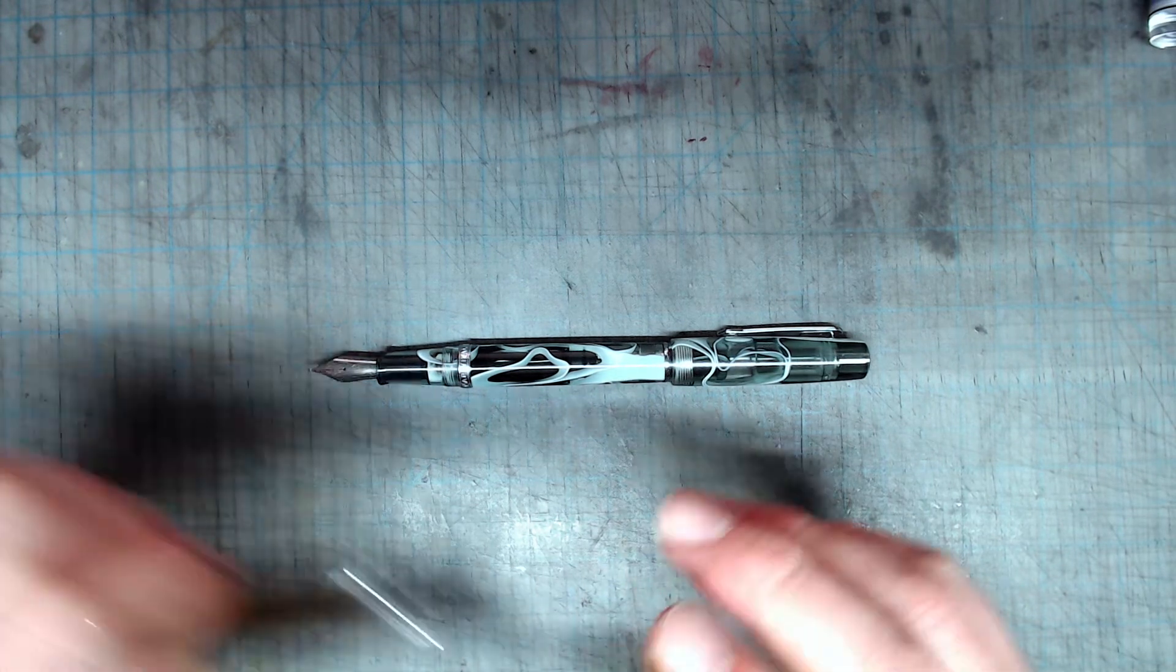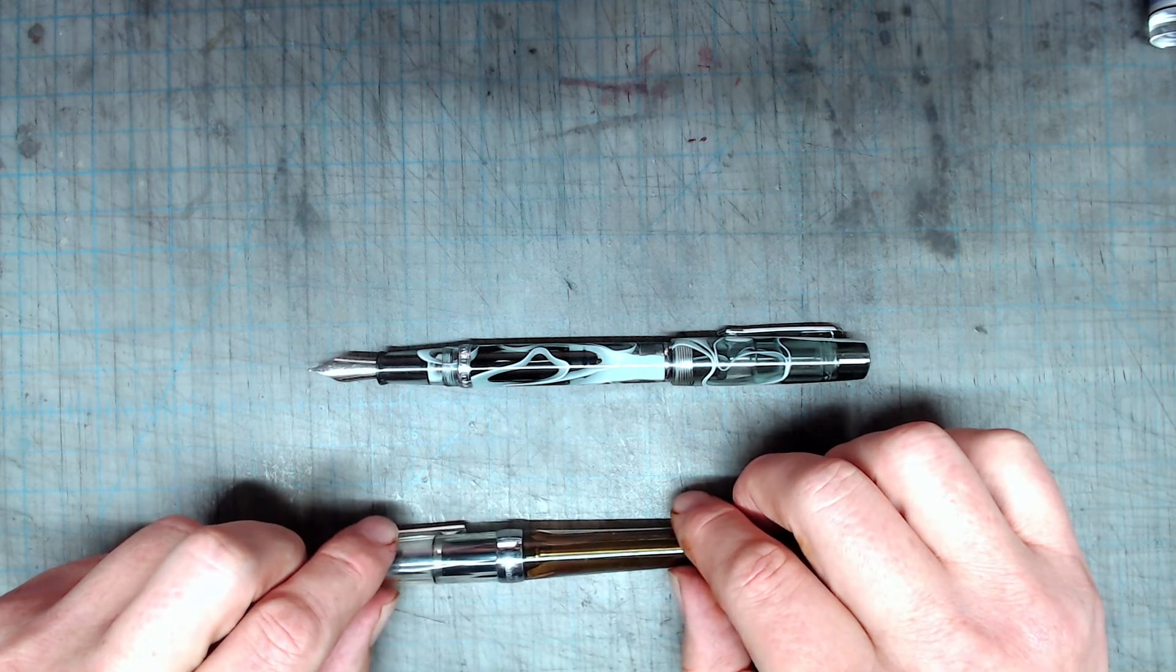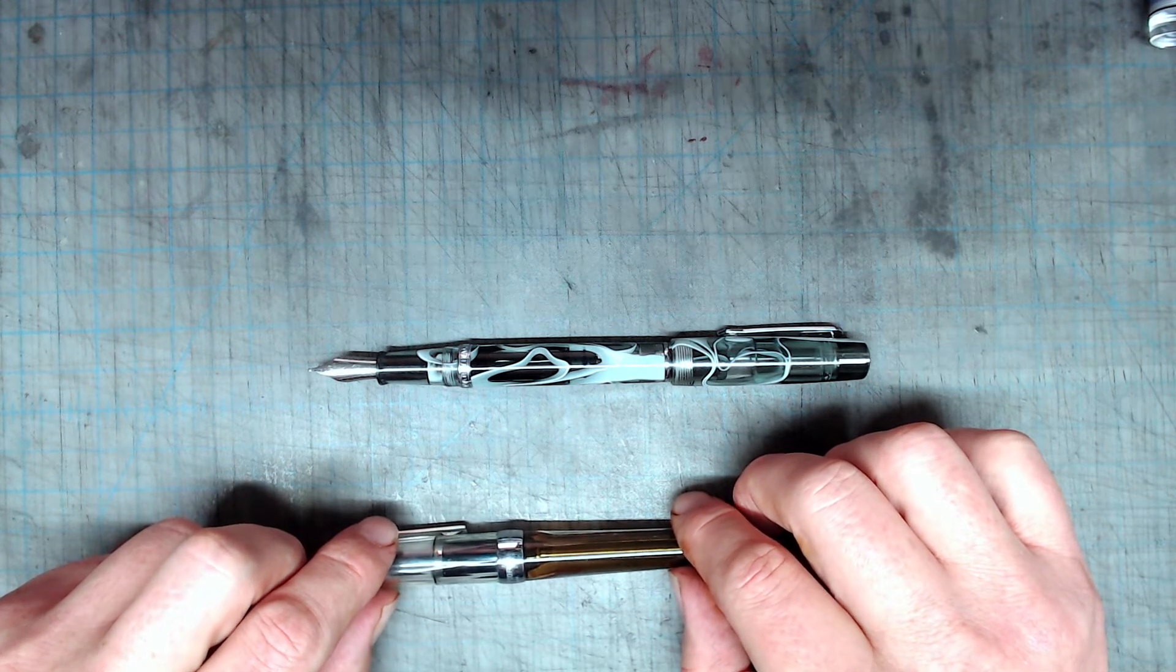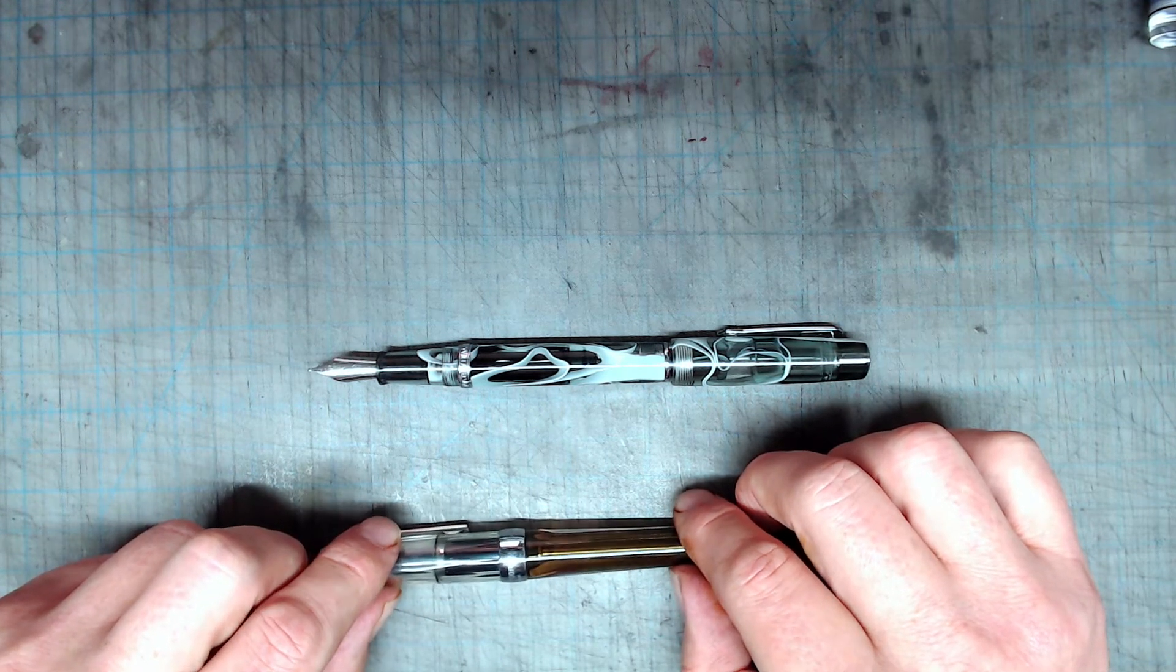Now, the Twsbi Vac 700 is comparable, about $20 more, has a well-functioning vacuum filling mechanism, and comes with a high-quality steel number 6 Jowo nib, which, let's face it, works better.